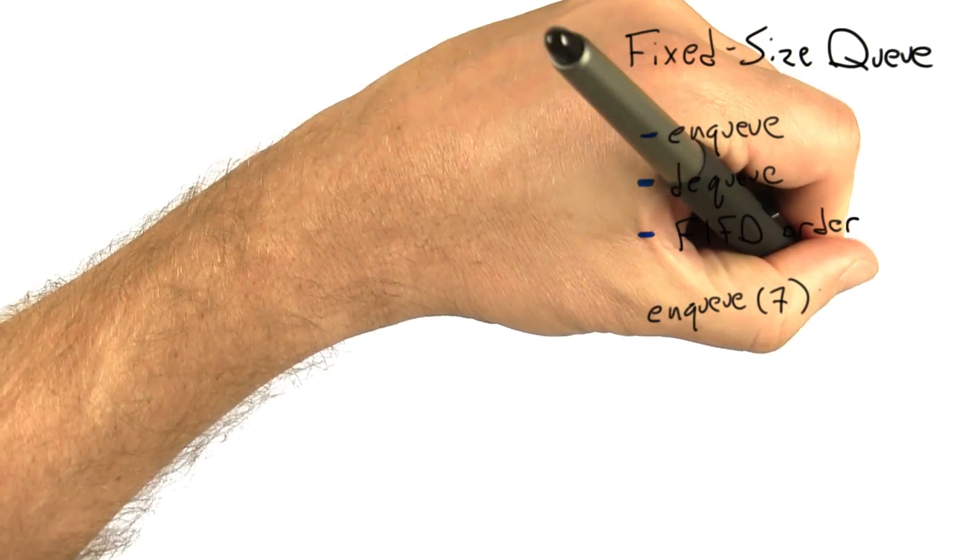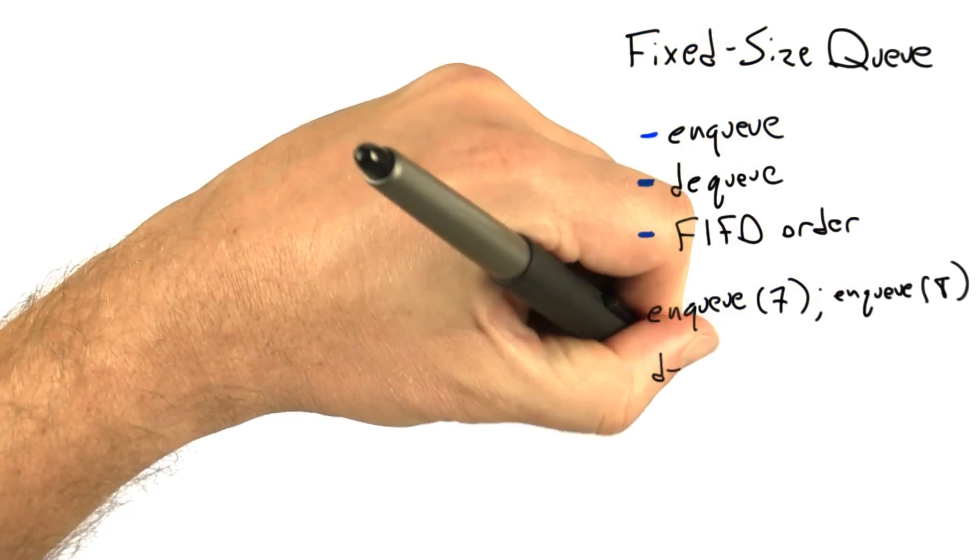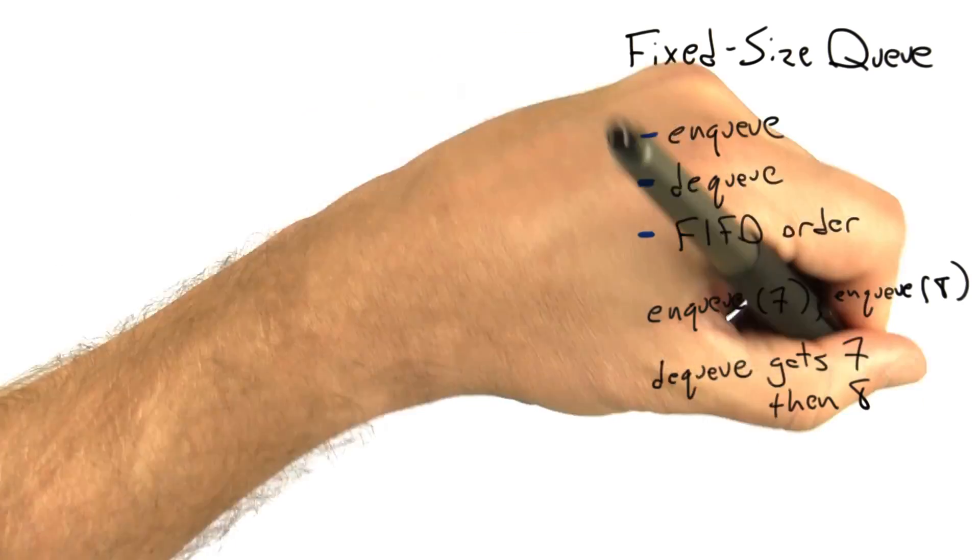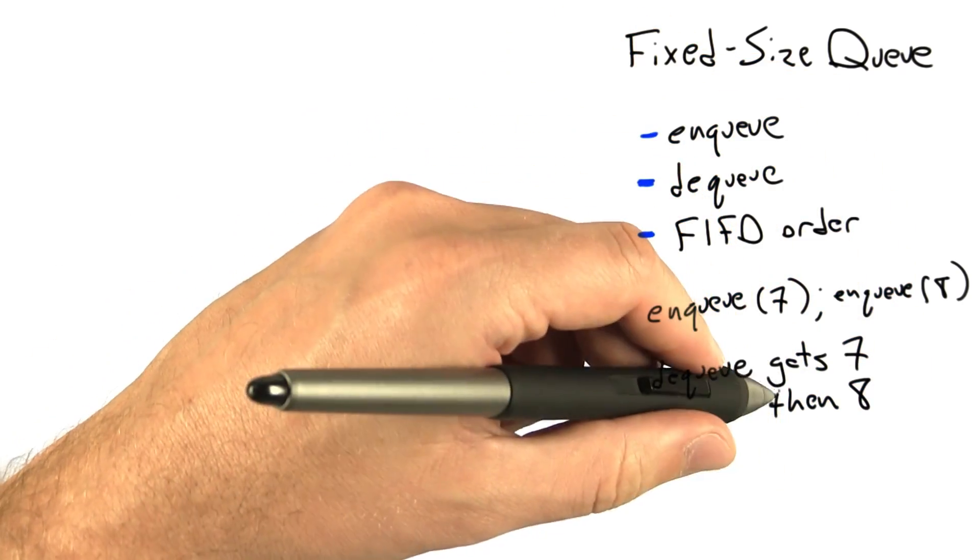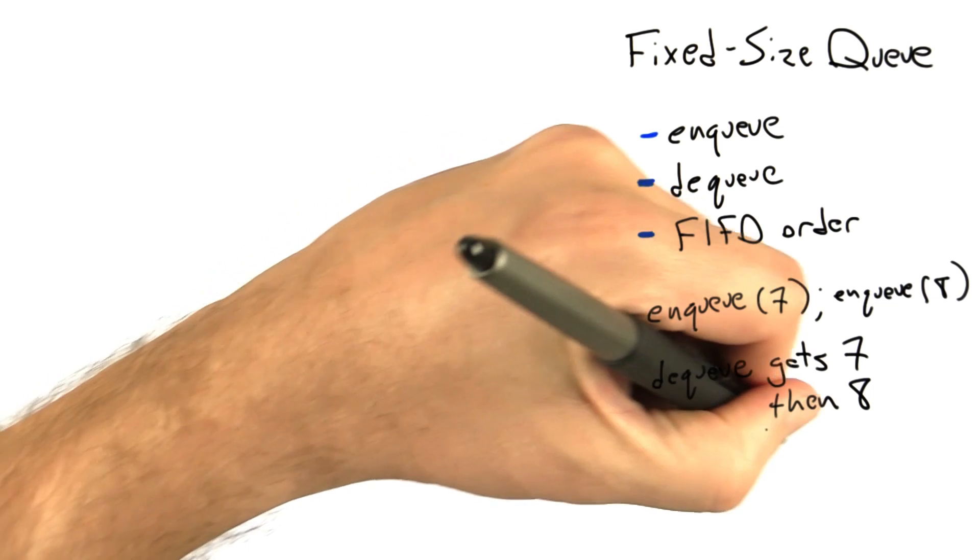If we enqueue 7 and then 8, the first thing that we dequeue will be 7, then 8. If we try to dequeue an element from an empty queue, we're going to get some sort of error.